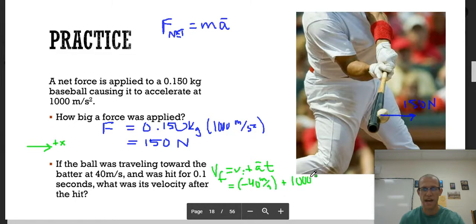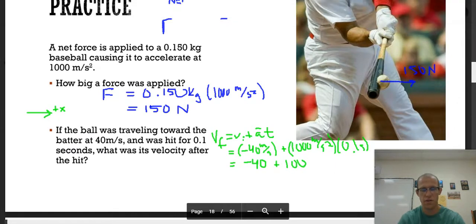Plus my acceleration, which is 1000. That's being applied by the bat, so that's going to be positive to the right. And I have to do that times time, a very tiny time, 0.1 seconds. So this is negative 40. This will be positive 100. And when I add those together, I will get out positive 60 meters per second. That would be the correct sig figs. Notice that the positive means I have a velocity in this direction, which makes sense because the ball is going to fly that direction.